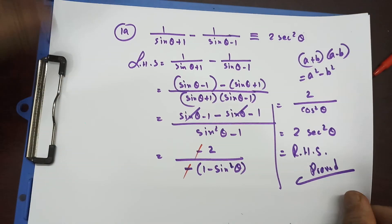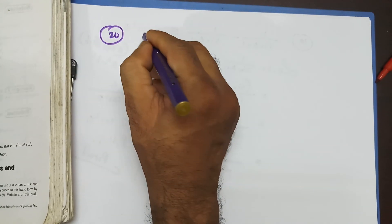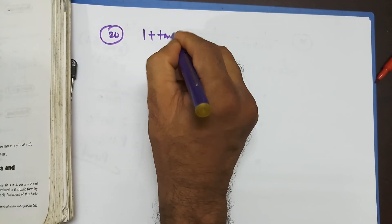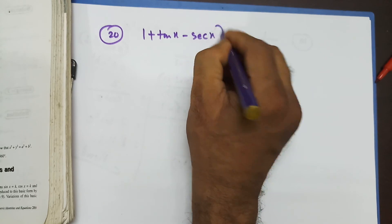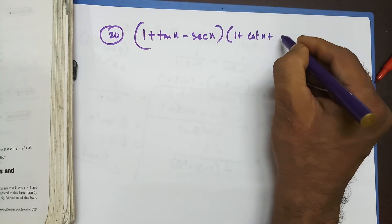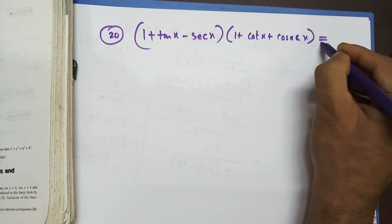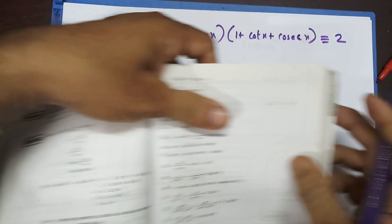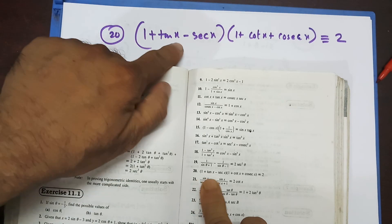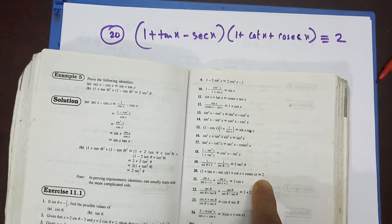Now I'm going to do question number 20. Question 20 is: (1 + tanx - secx)(1 + cotx + cosecx) is identical to 2.